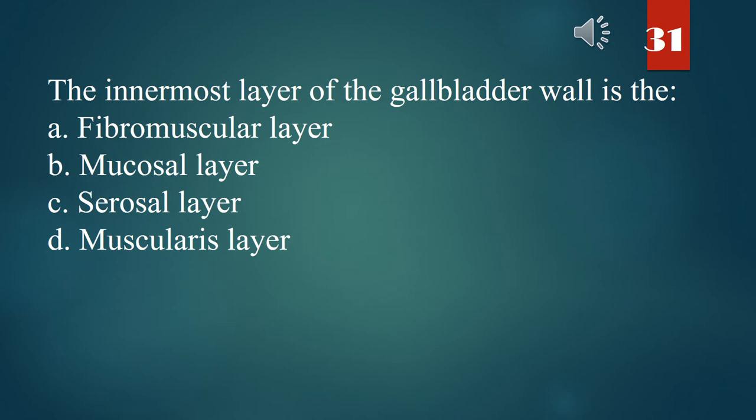The innermost layer of the gallbladder wall is the: A. Fibromuscular layer. B. Mucosal layer. C. Serosal layer. D. Muscularis layer. The answer is B. Mucosal layer.